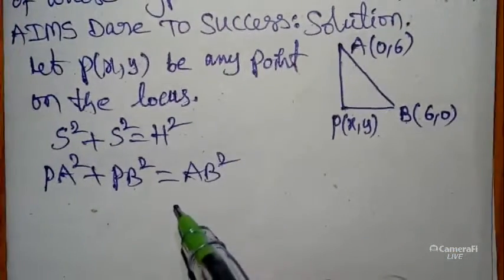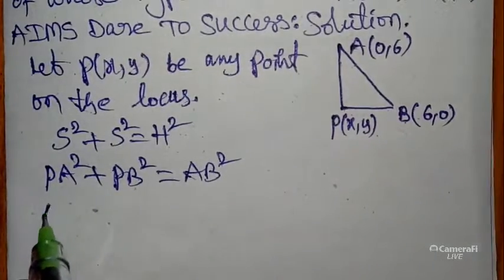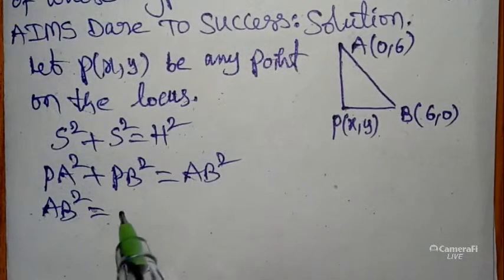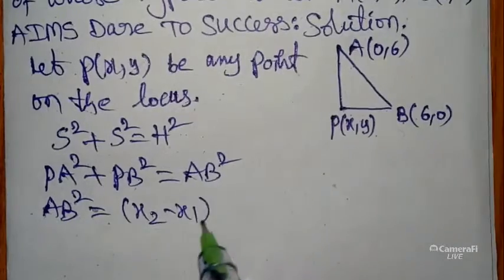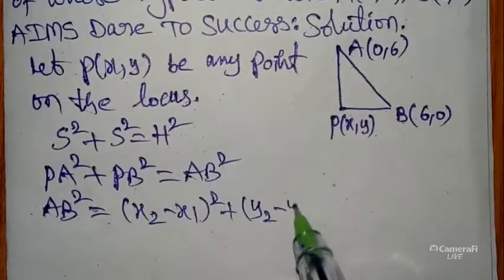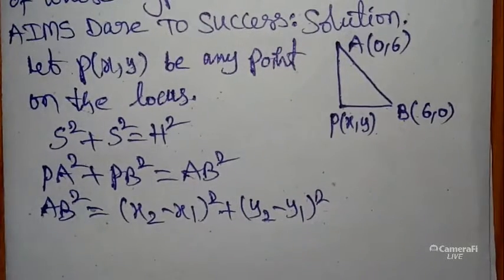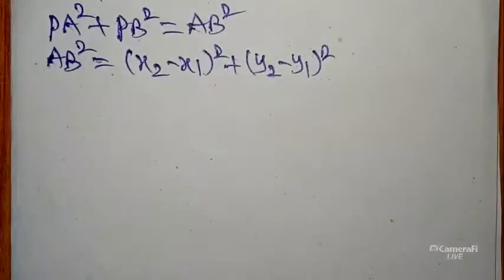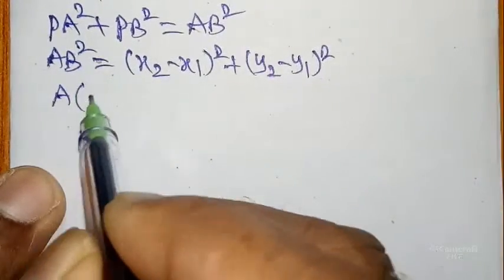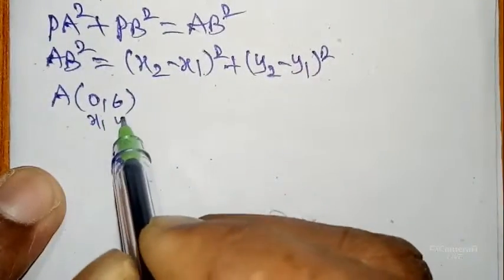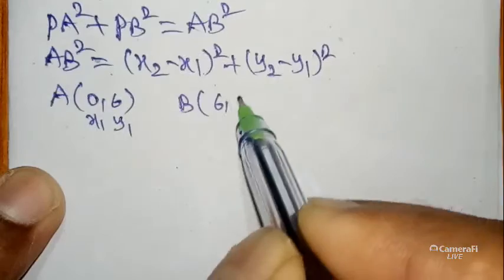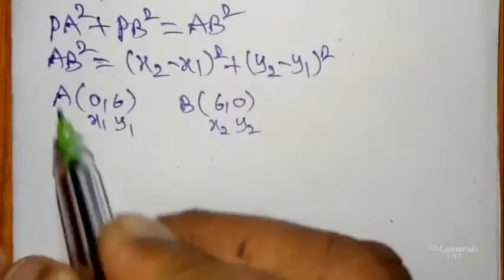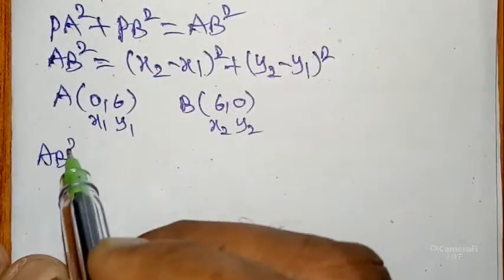Now I will use the distance formula from 10th class: the square of the distance = (x₂ − x₁)² + (y₂ − y₁)². Using this concept, A is (0, 6) — let it be (x₁, y₁) — and B is (6, 0) — let it be (x₂, y₂).